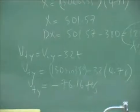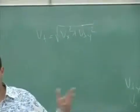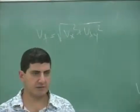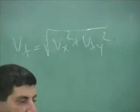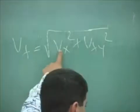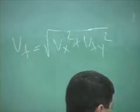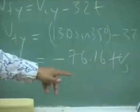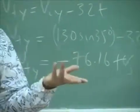you take square root of Vx squared plus V final y squared. Now, Vx squared, Vx never changed. So that one was always 130 cosine of 35. So that's 130 cosine of 35. Square that and add to that, this thing, 76.16 squared. And you should get an answer for V final.